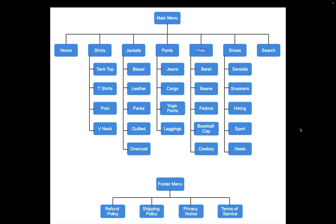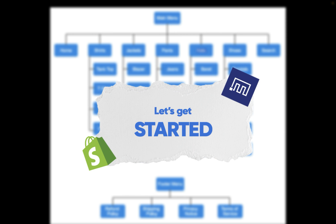My menu items consist mostly of home, search, and in the middle would be collections. For footer menu, the menu items would be policies. You may have different types of menu items and that's completely fine. In this example I will show how to work with these menu items and how to set your file up for import. So let's get started creating our file for import.